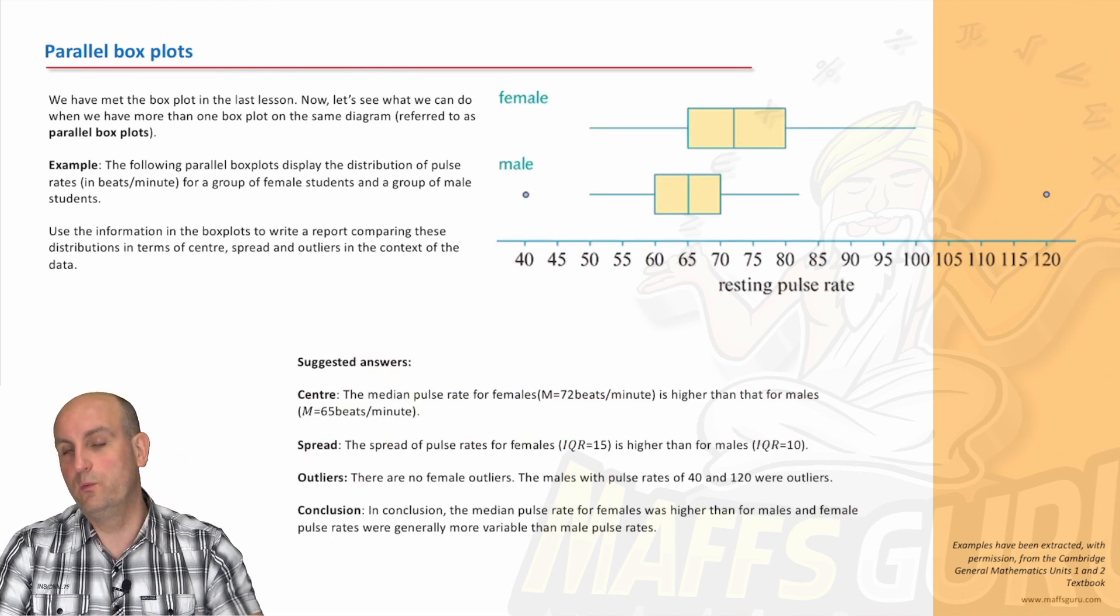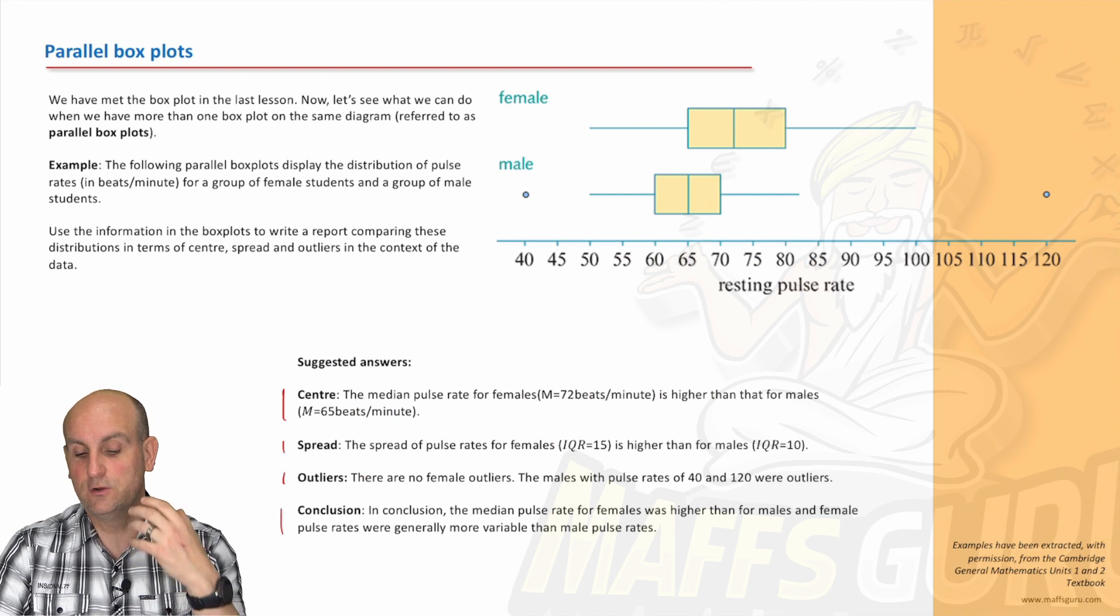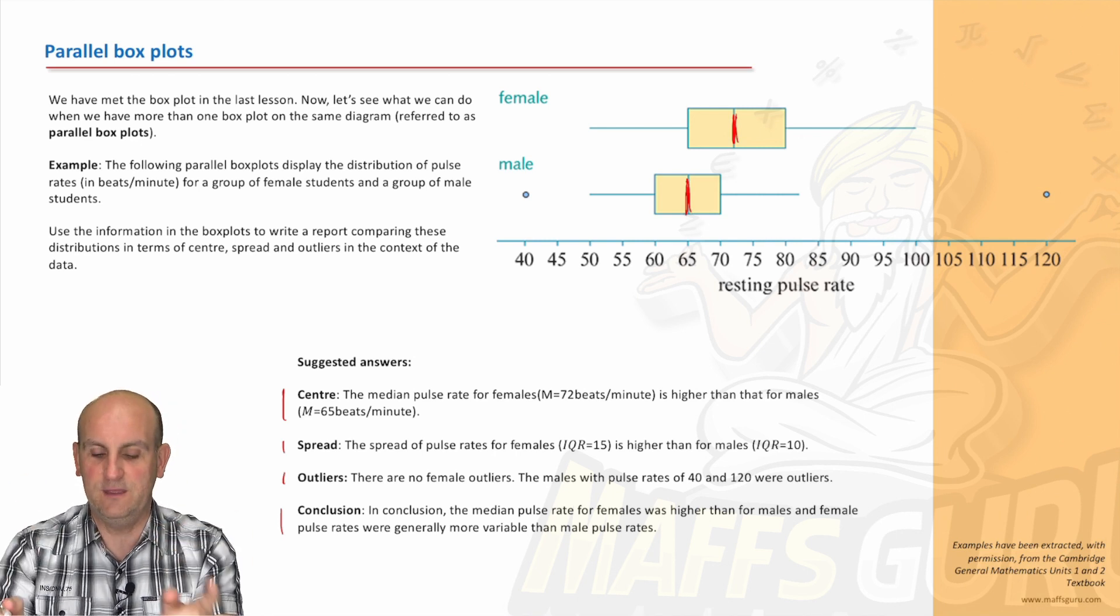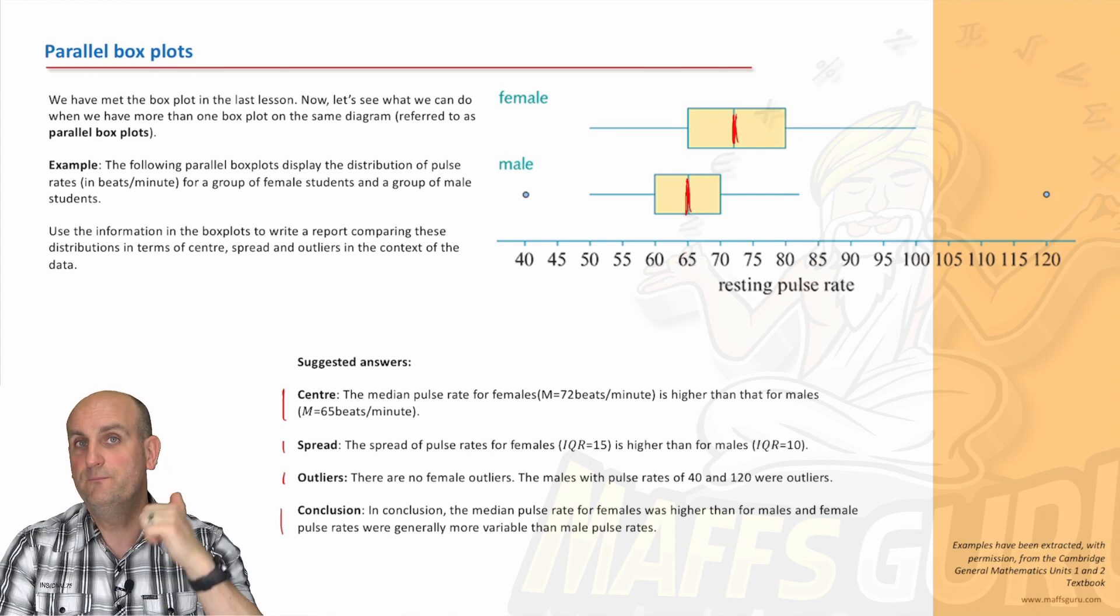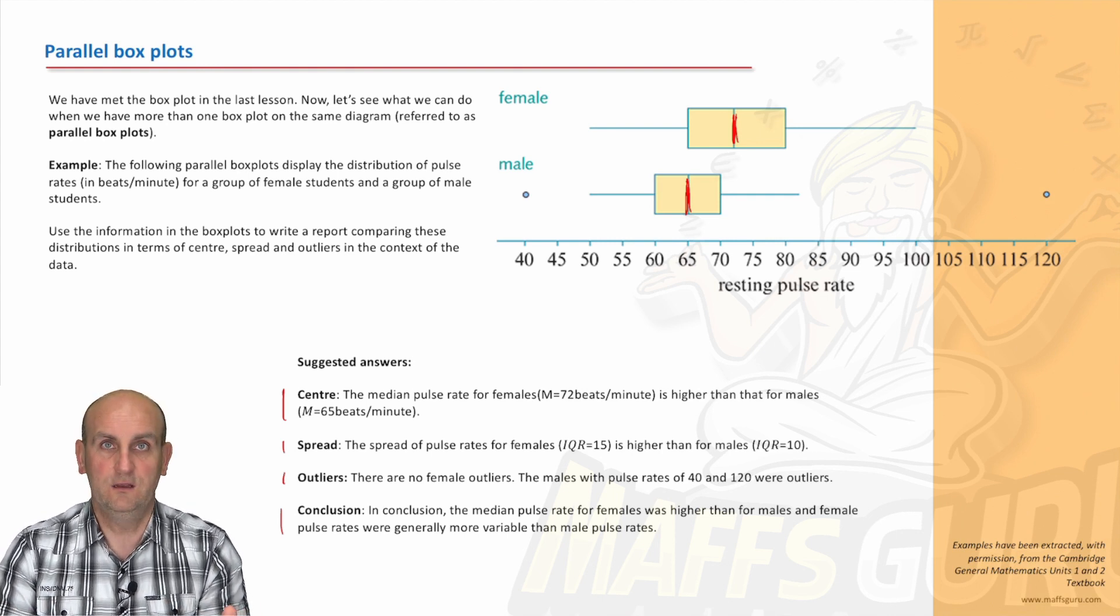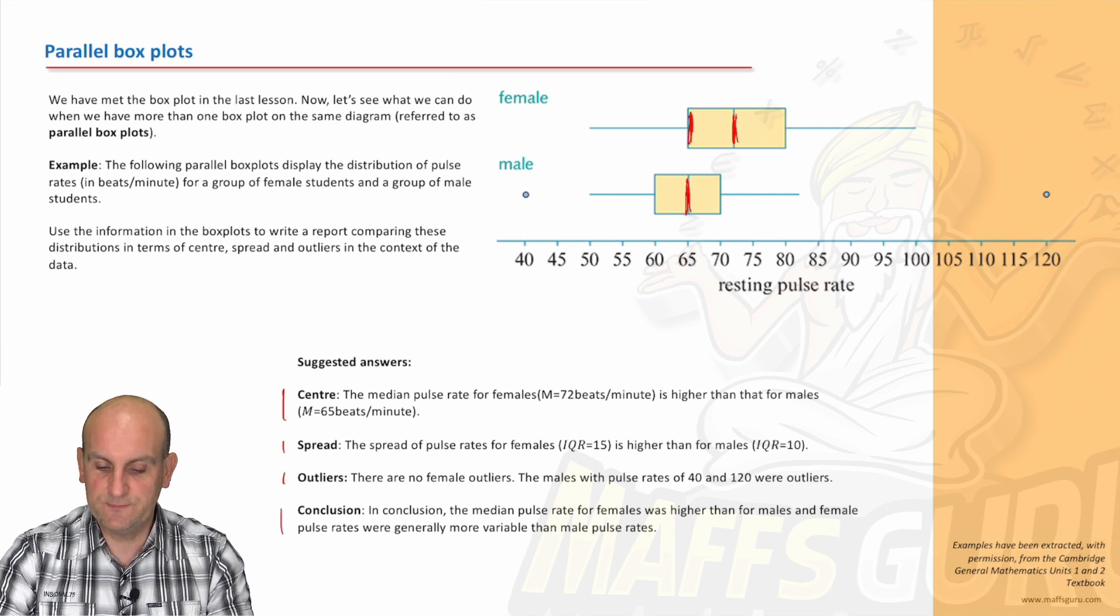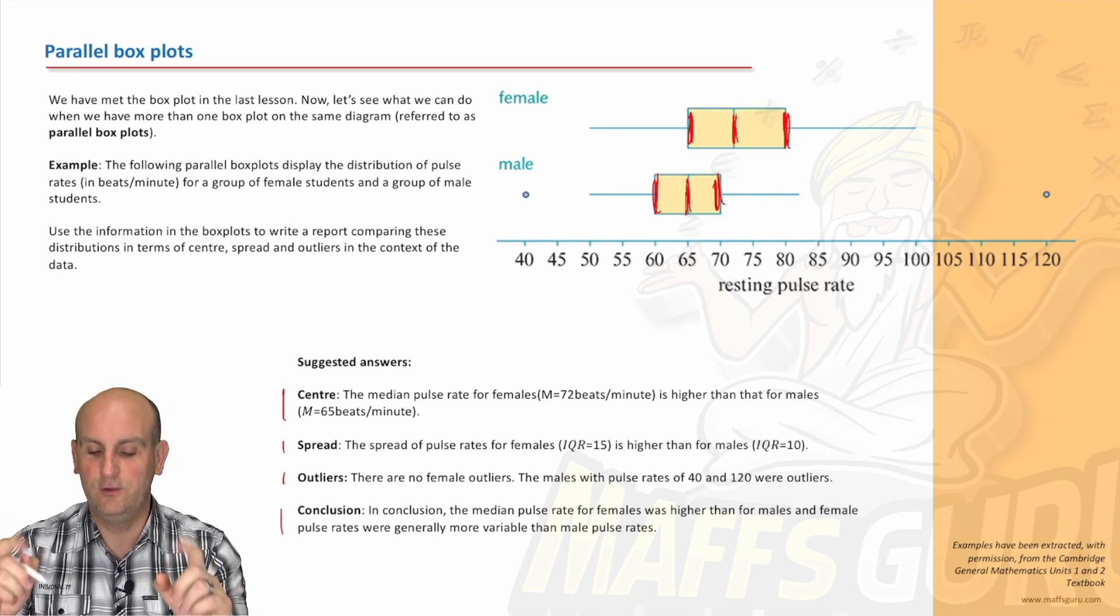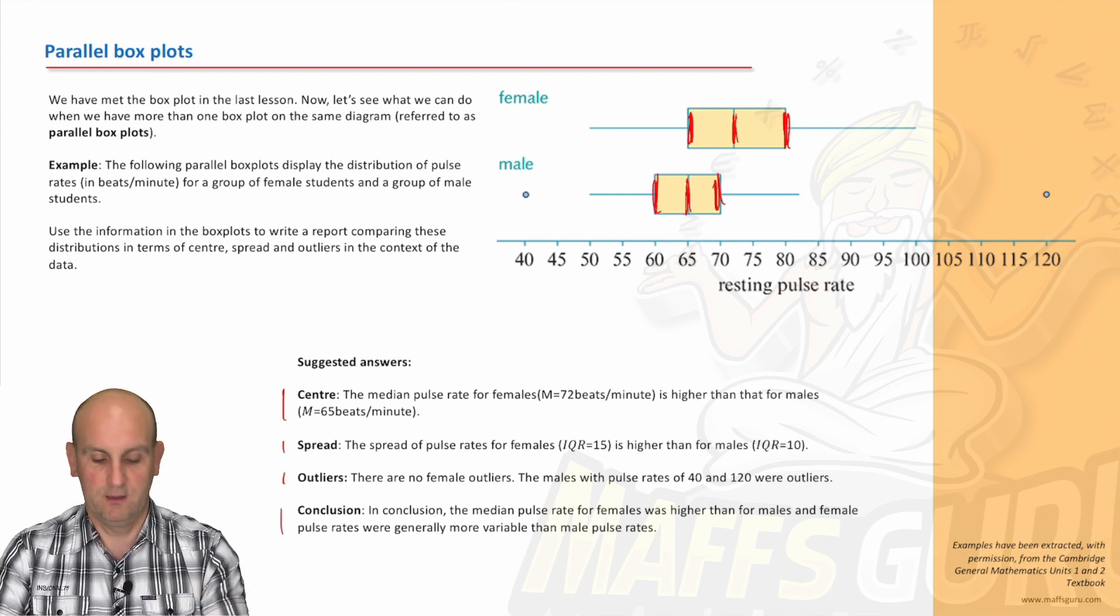So, here we go. Let's see what we can come up with with our statistical report. And you'll notice here, we've talked about center, spread, outliers, and a conclusion. So let's look at the center. That's this line here, center here, and center here. The median pulse rate for females, they've given it, M equals 72, and the units, is higher than for males. With it, again, given. So we've given the female, we've said male, and we've given our data item, and we've given an indication of where it's higher. Now, notice here, they didn't say how much higher it was. That's fine. You could put it in. Would you get extra marks? Who knows? But it's not gonna hurt. What about the spread? The spread. So that's the difference between the ends of the actual box. The spread of pulse rates for females, i.e., and they've said IQR is 15, is higher than for the males at 10. And we could have said five higher.